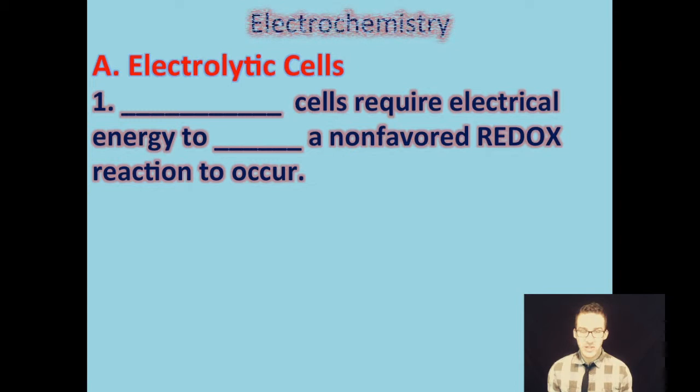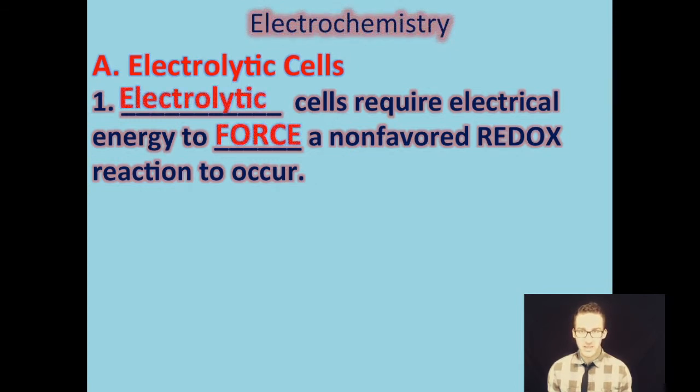Just a couple of things to keep in mind for this part of your notes. Electrolytic cells require electrical energy to force a non-favored redox reaction to occur. So different from your voltaic or galvanic cells where we didn't have to force those reactions to happen. They were spontaneous and we didn't have to apply any energy in order to get them to happen. Those were thermodynamically favored. So a little bit different here, but again, a redox reaction.